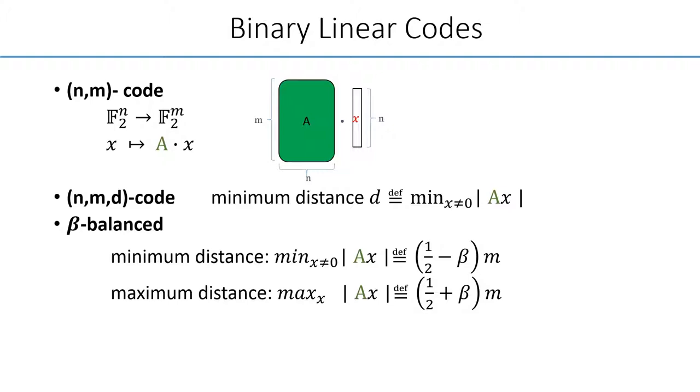In other words, the codeword has almost the same number of zeros and ones, up to a beta fraction. In this work, we also consider the so-called independent code, where the generator matrix has k-wise independent rows.